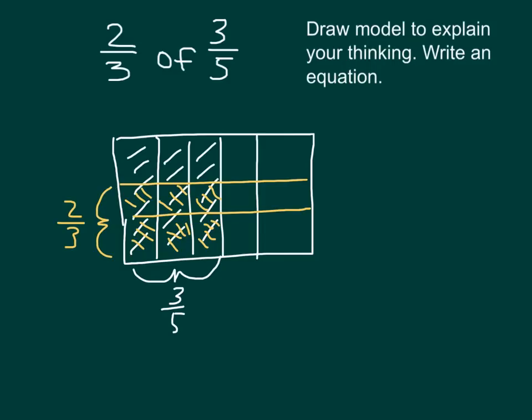Now, if we look at our model, we have six shaded parts out of a total of fifteen. So the answer, according to our model, is six-fifteenths.